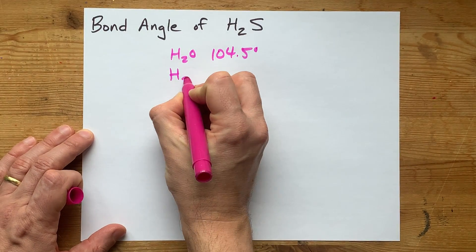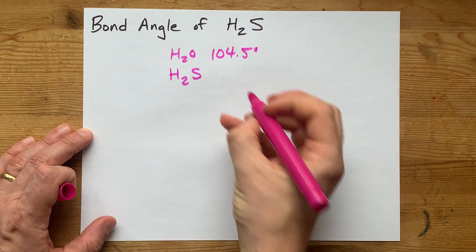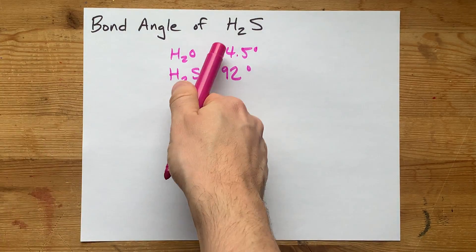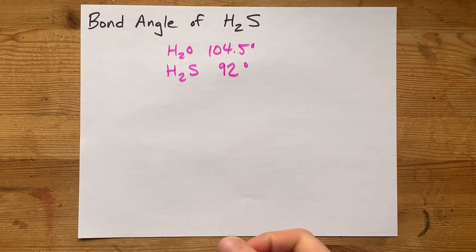But if you're doing more advanced chemistry than regular high school, the actual answer is about 92 degrees, which is way smaller than what you'd probably predict.